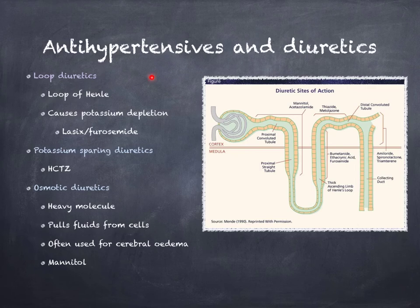It should be noted that diuretic agents, because they promote either the shift of fluid or the excretion of fluids, one of their effects is to decrease blood pressure. So a diuretic agent can decrease blood pressure by getting rid of fluids. The first and most common type of diuretic agents are known as loop diuretics.